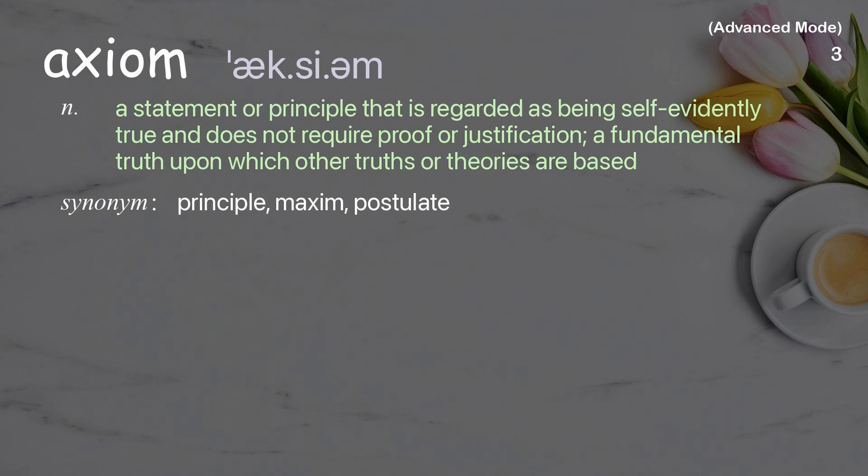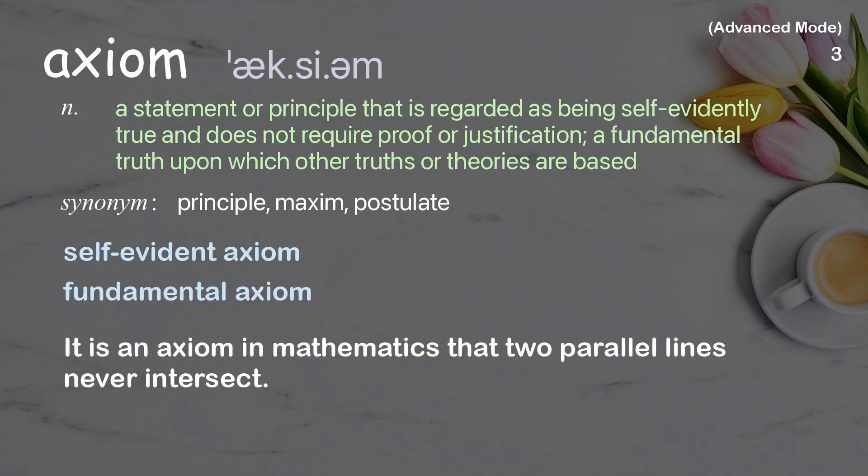Axiom. A statement or principle that is regarded as being self-evidently true and does not require proof or justification; a fundamental truth upon which other truths or theories are based. Examples: Self-evident axiom. Fundamental axiom. It is an axiom in mathematics that two parallel lines never intersect.